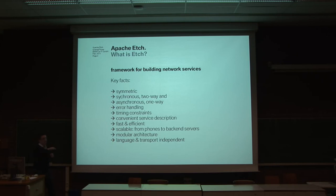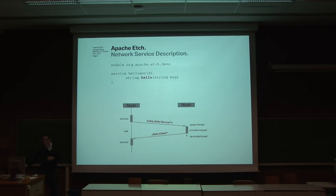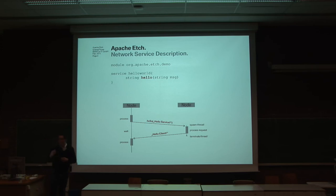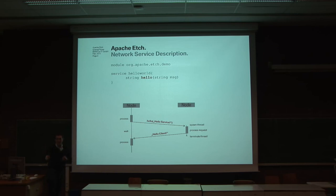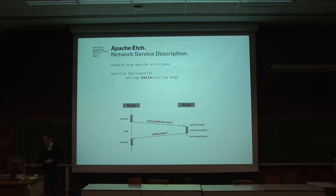The very basic thing you can do in Edge is write network service descriptions. In this case, you have a service called Hello World with a method called Hello that passes a string and returns a string. What happens on the wire is: you have nodes in your network communicating over TCP/IP, you say hello to your server, the server processes the request and tells you hello back. This is what you probably know from various RPC-based frameworks, and you can do this in Edge too — but there's more.